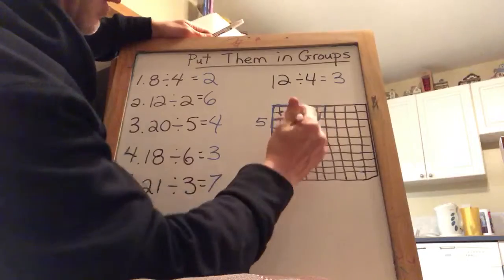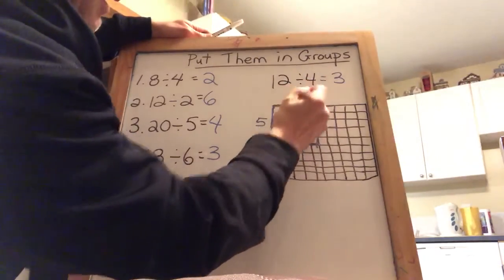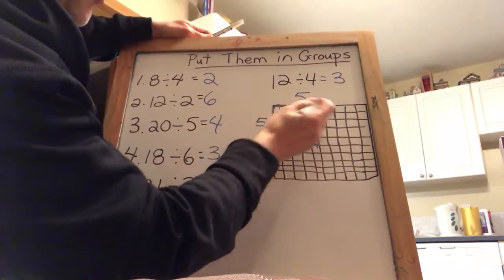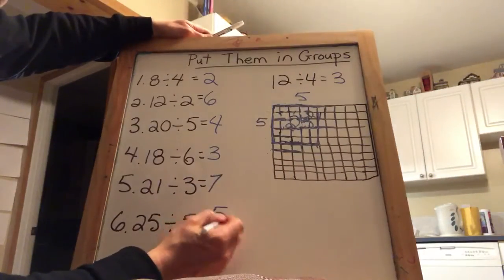And look at that. 25 divided by 5 is 5, right? 1, 2, 3, 4, 5 across. So 5.